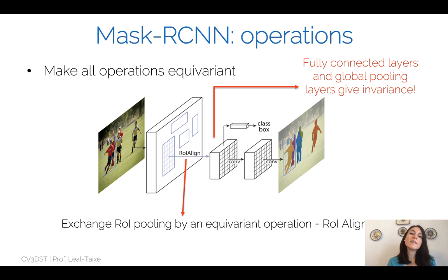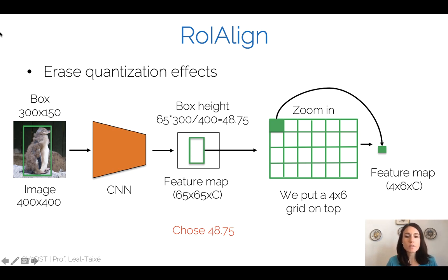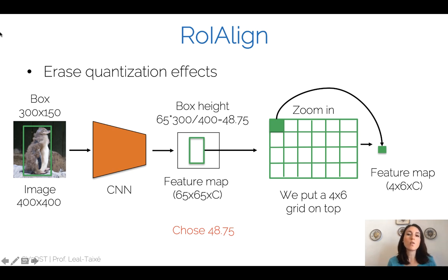The idea of Mask R-CNN is to exchange all invariant operations with equivariant ones. Specifically, ROI pooling is replaced with an equivariant operation called ROI align. One goal of ROI align is to erase quantization effects. In the example where the 300-pixel box becomes 48.75 in the feature map, instead of rounding to 48, ROI align allows us to use exactly 48.75 and still perform the region of interest pooling operation.